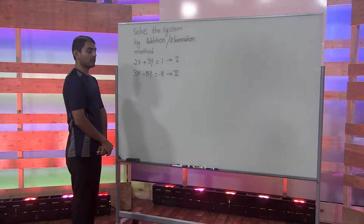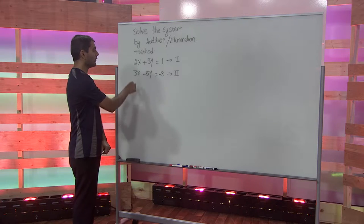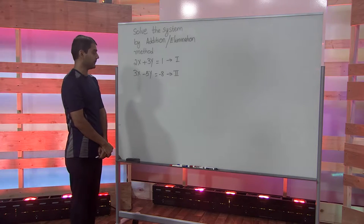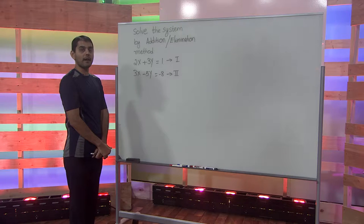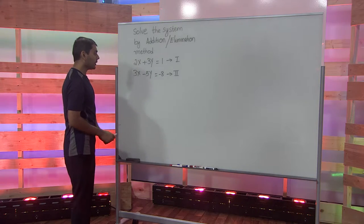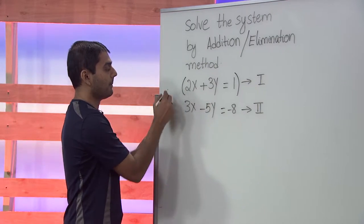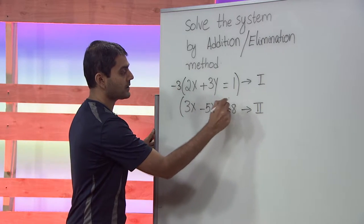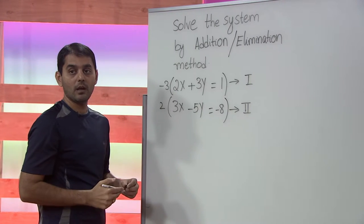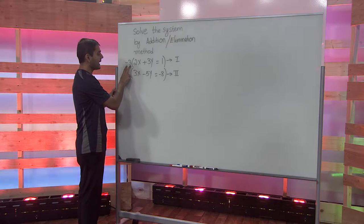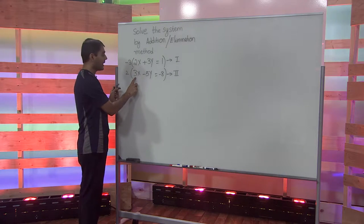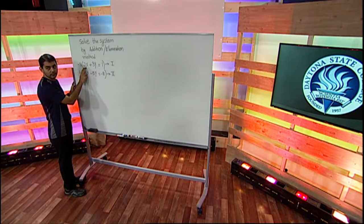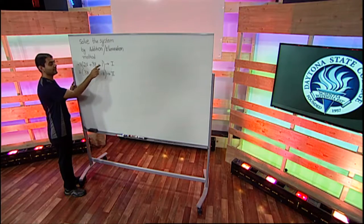To solve for the variables x and y using the addition method, we want the coefficients of the variable to be opposite. In this example, the coefficients of the variables are not opposite, so we want to make them opposite. There are several ways to do this. One way is to multiply the first equation by negative 3 and the second equation by positive 2. We get negative 3 by flipping the sign of the coefficient of x in the bottom equation, and we get 2 by retaining the same sign for the coefficient of x in equation 1.